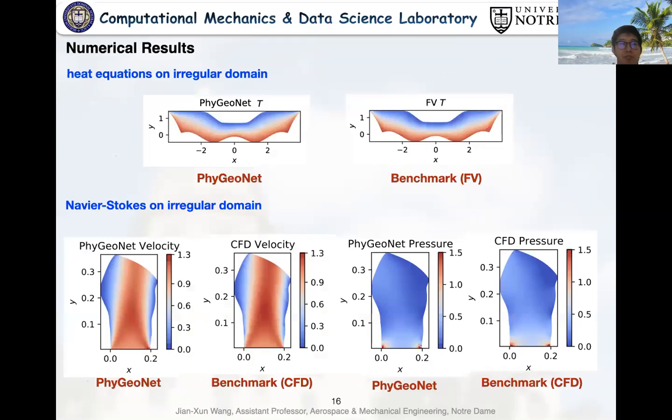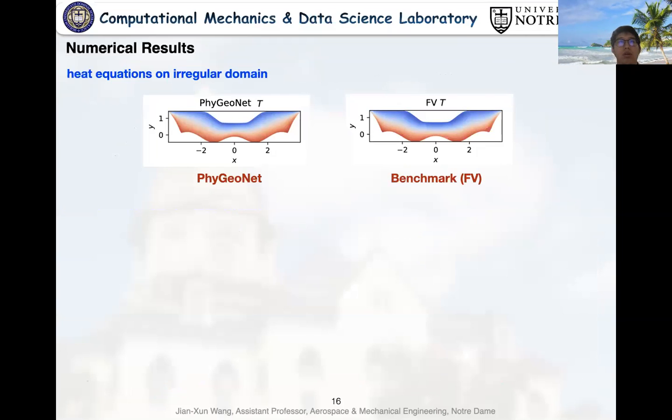Okay, firstly, I would like to show you the results using PhyGeoNet to solve heat equations on an irregular Batman-shaped domain. The left figure is the network prediction and the right one is the reference. Although the geometry is very irregular, the PhyGeoNet is still capable of accurately capturing the solution.